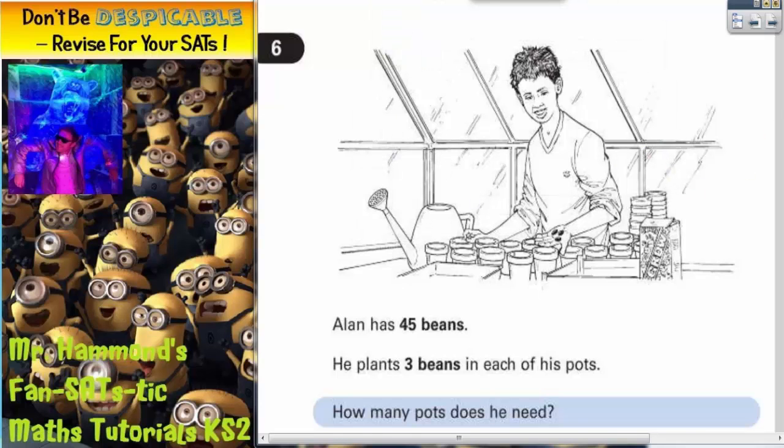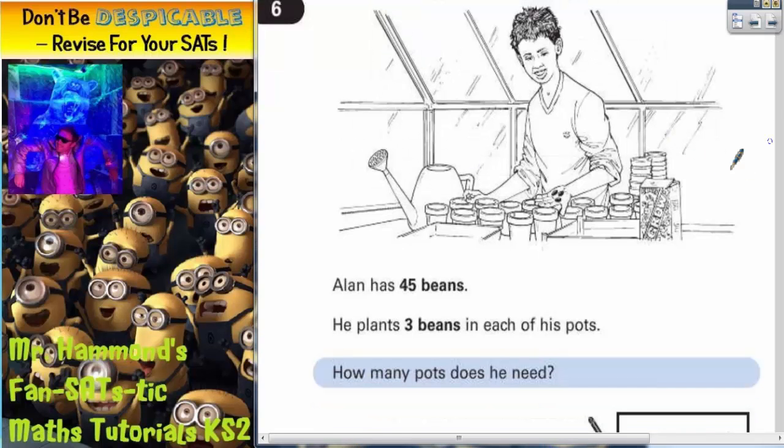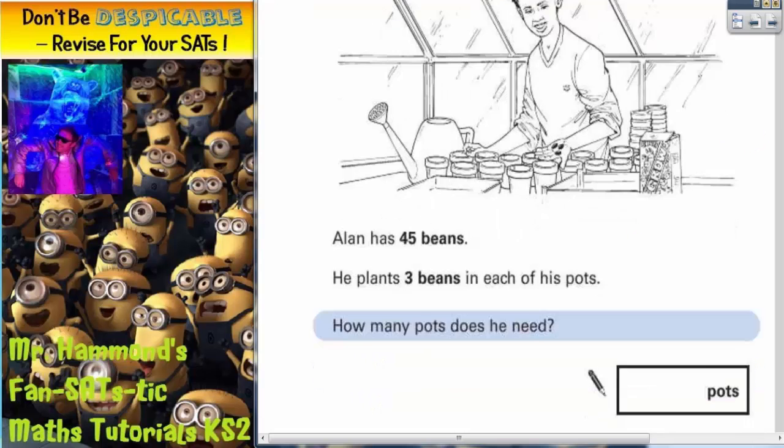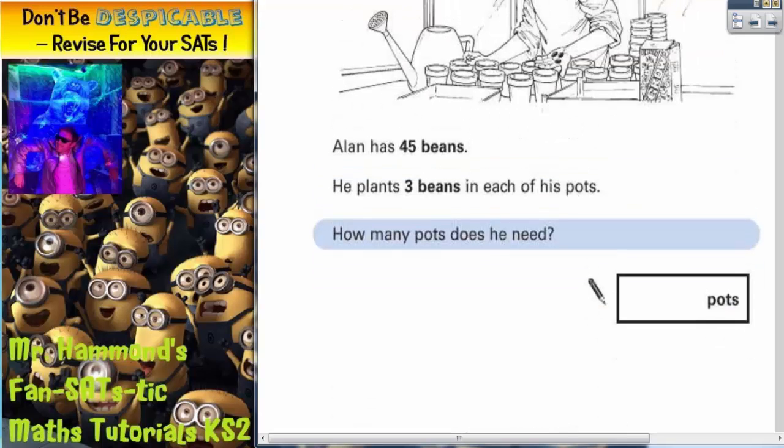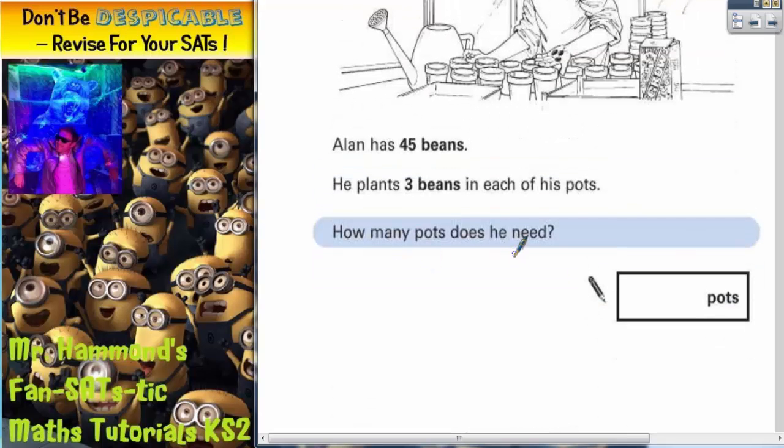Question 6. There's a picture of Alan in his greenhouse. Alan's got 45 beans. He plants 3 beans in each of his pots. How many pots does he need? We're not really interested in the picture there, so let's scroll down and get rid of that. That'll just distract us. So, how many pots does he need?